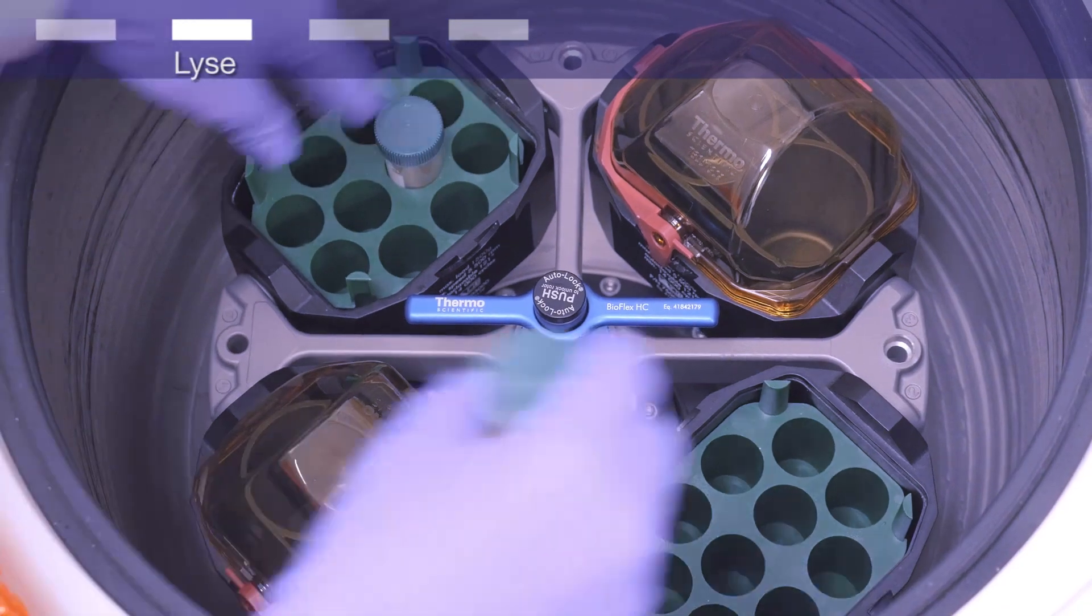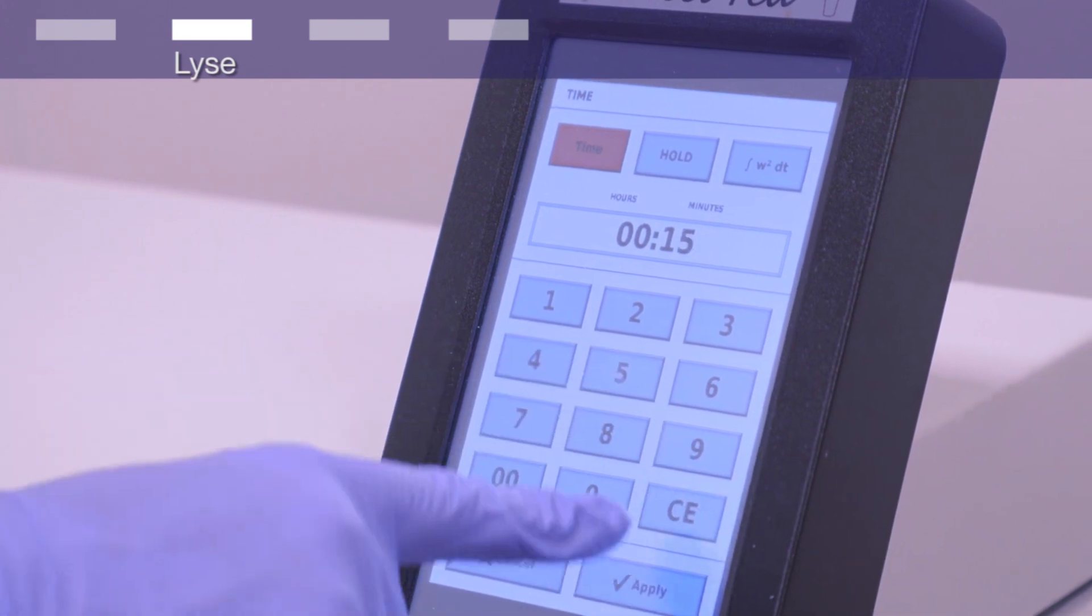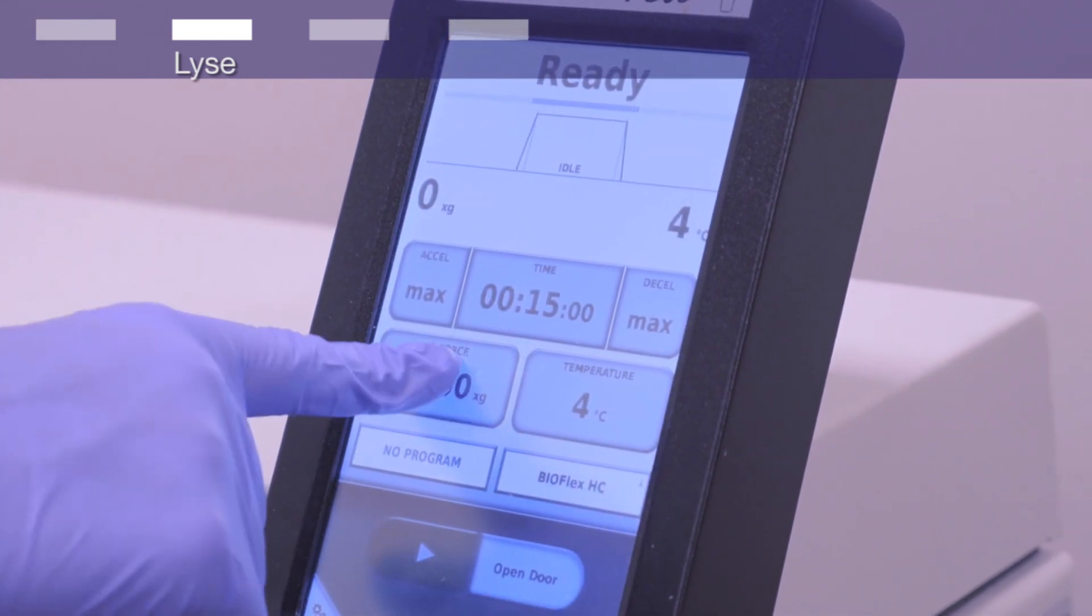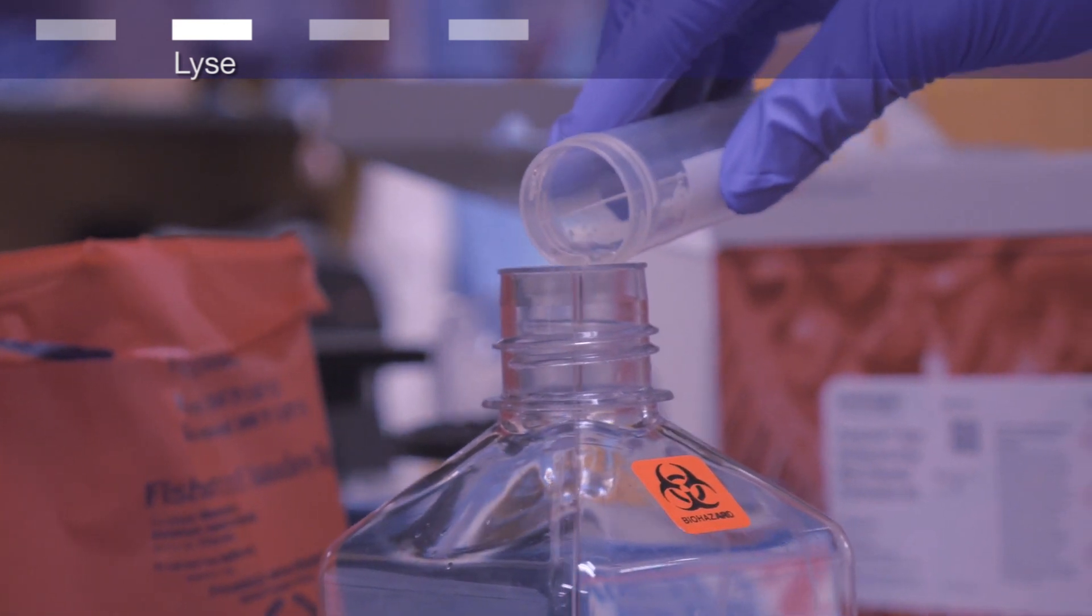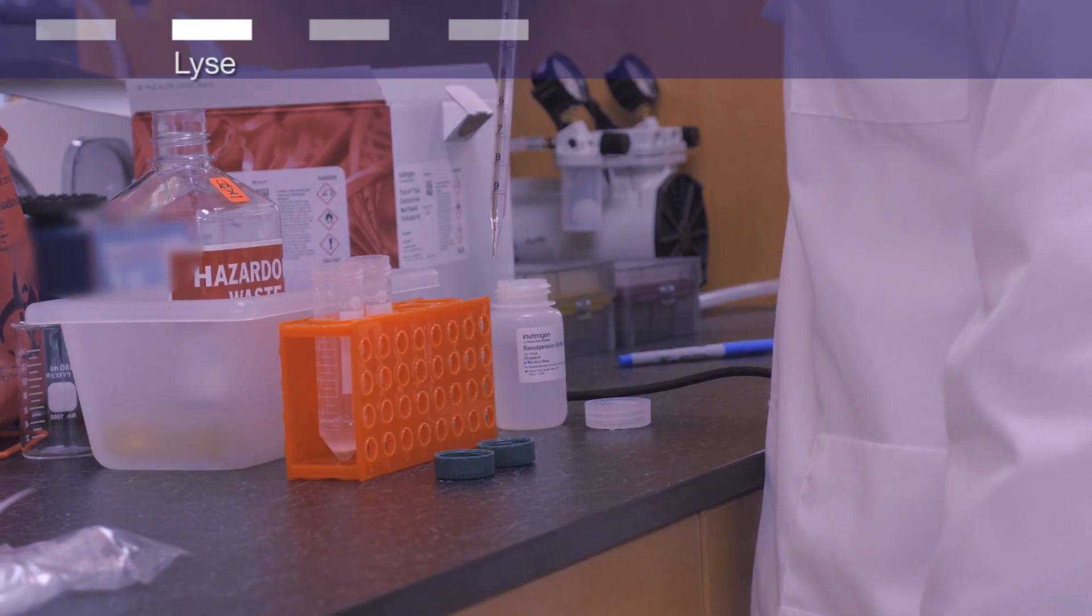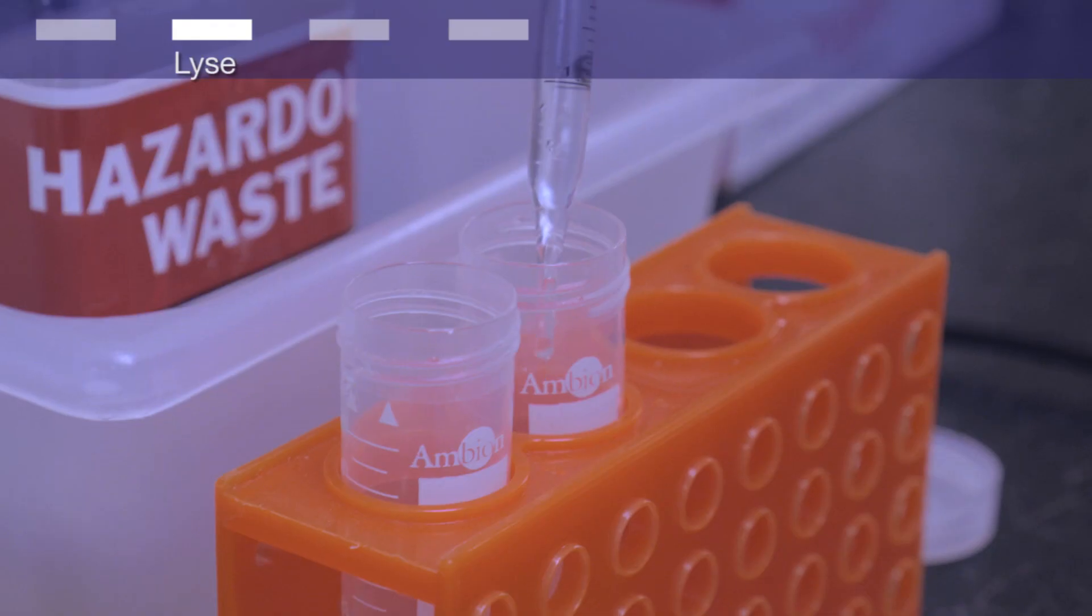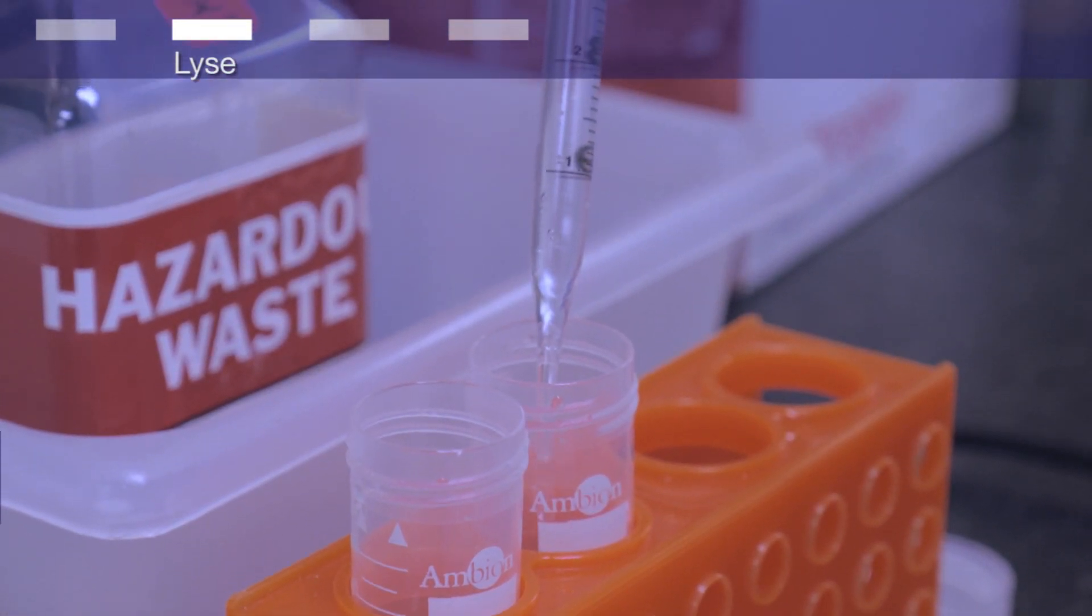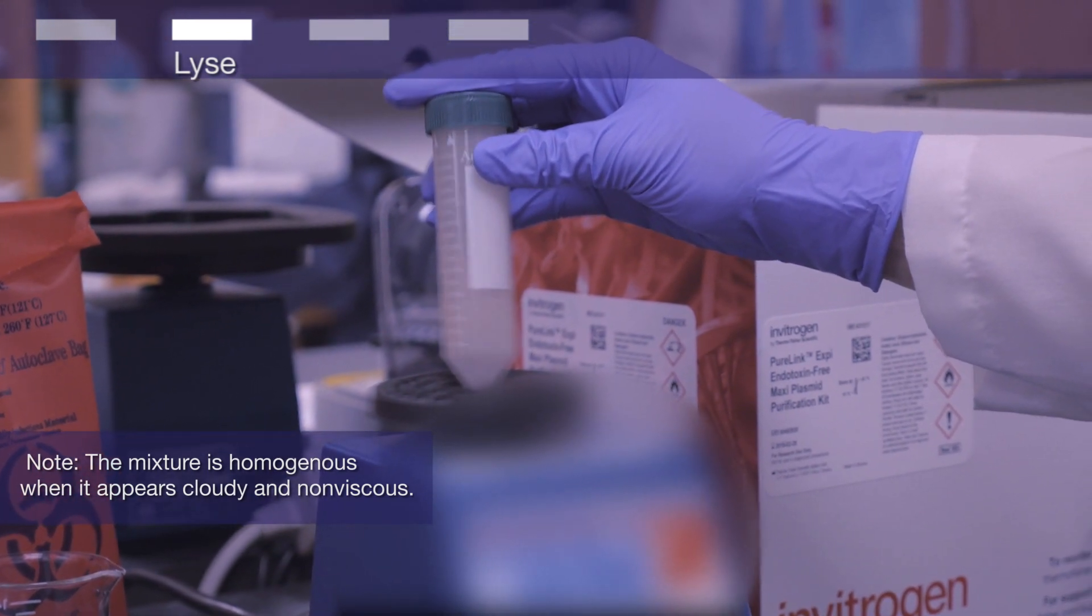To lyse cells from your overnight culture, first harvest cells by centrifugation at 4000 times G for 15 minutes at 4 degrees Celsius. Carefully discard the supernatant and add 6 milliliters of resuspension buffer with RNase A, and optionally lysis indicator, to the cell pellet. Resuspend by vortexing or pipetting until the sample is homogenous.